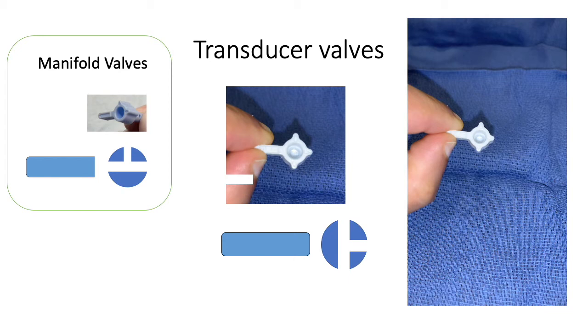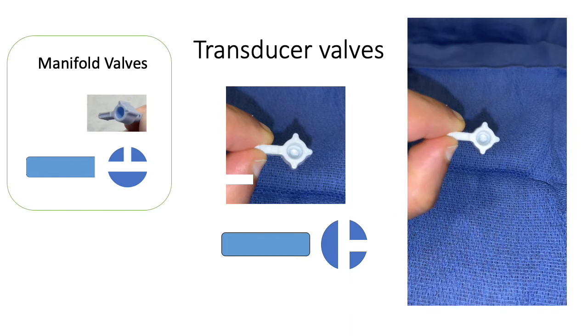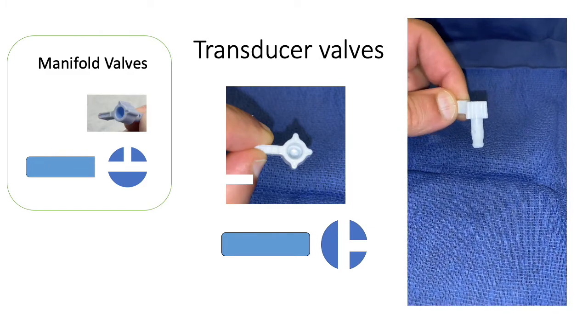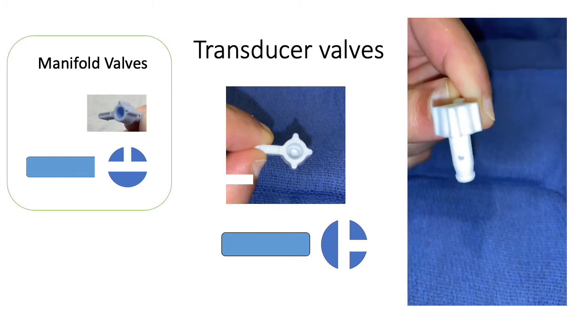The manifold valves that we use are shown on the left. And you can see the orientation of the openings. But the valves that are found within our transducers are different.